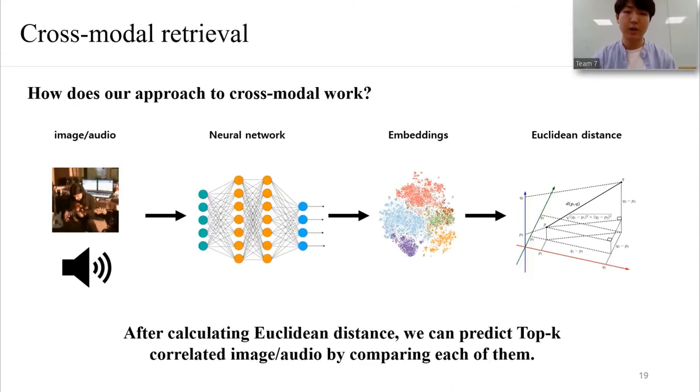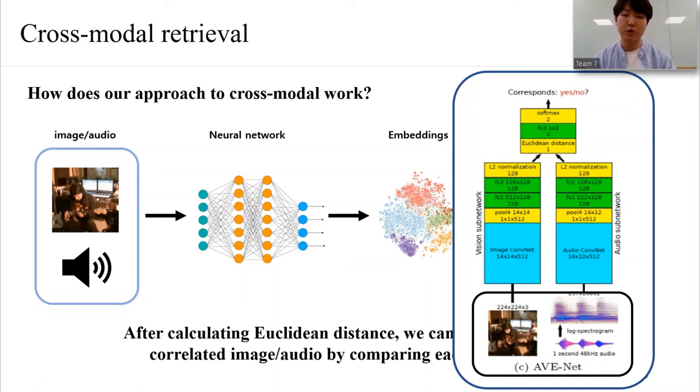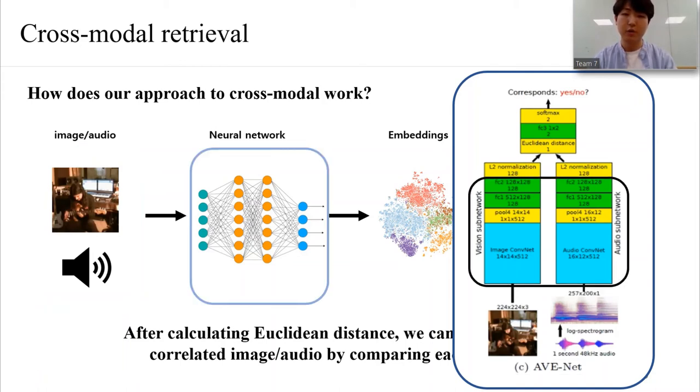How does our approach to cross-modal work? Well, there are four main steps. First, input our data. In this work, our data is image and audio. Then, by using our deep neural network, we can make features or representations for whole image and audio datasets.